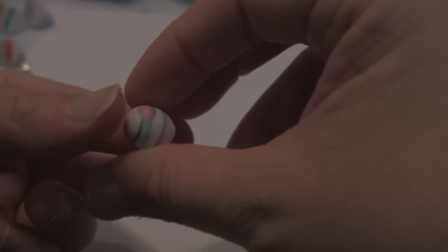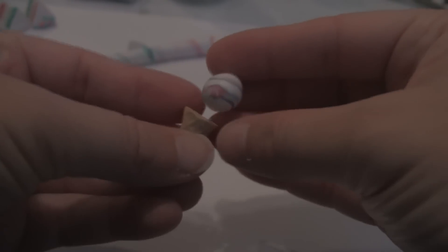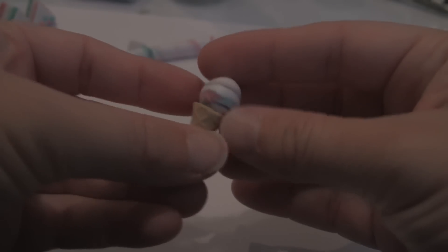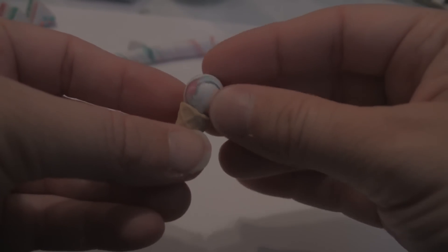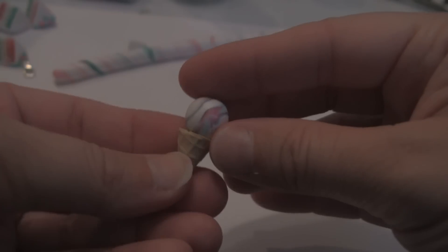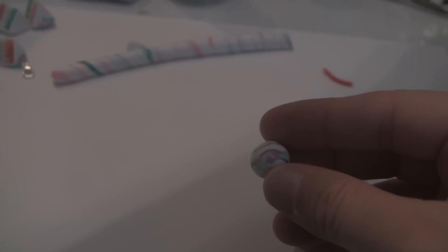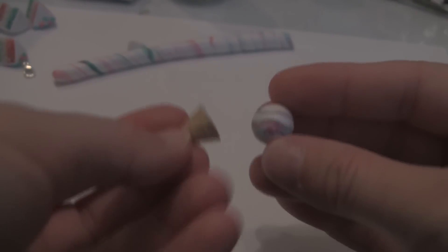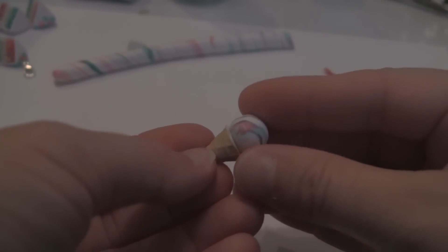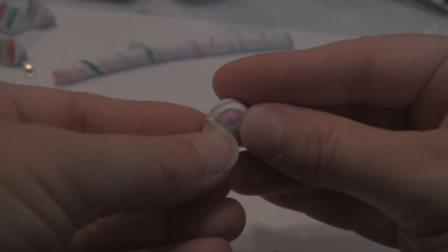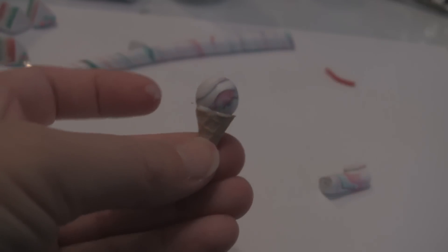Then from here, I roll it into a ball. And then we decide what area we like on the cone showing. I think I like that part facing forward. So we find the front of our cone. I'm going to dip my cone into Translucent Liquid Sculpey. So the edges have Translucent Liquid Sculpey in it. And I am going to place my ice cream on my cone.